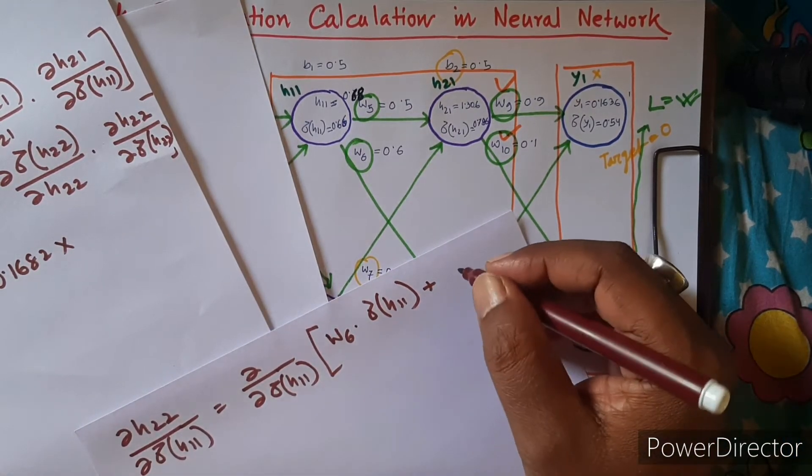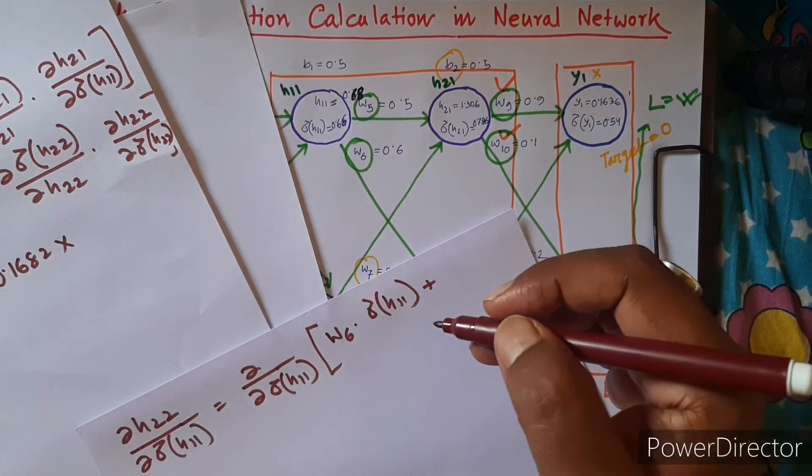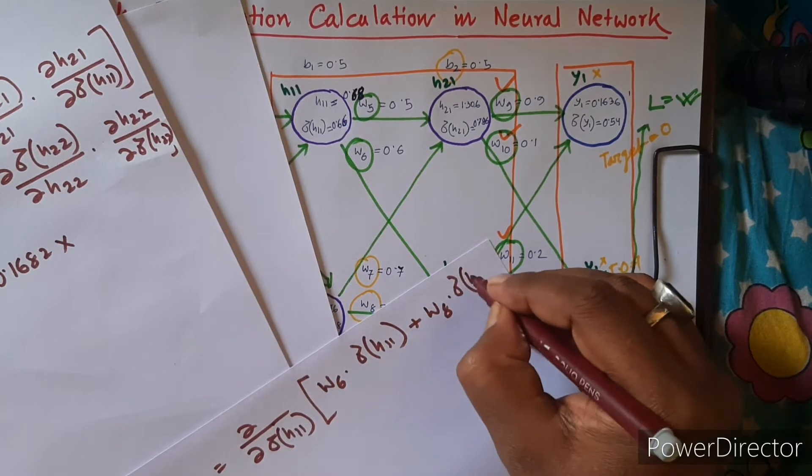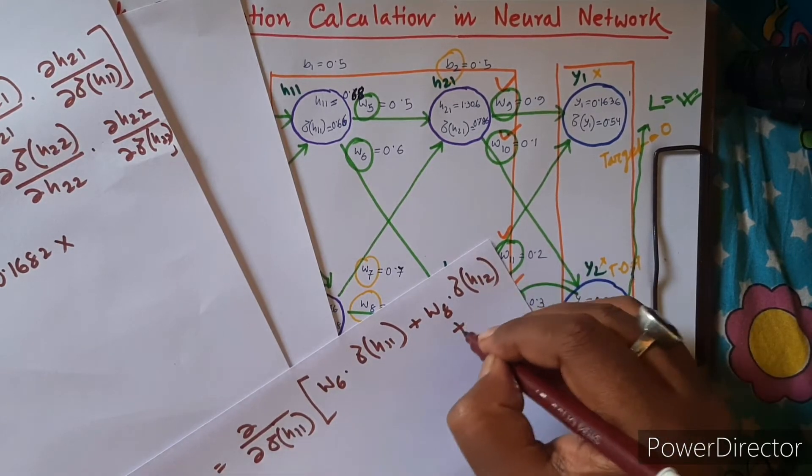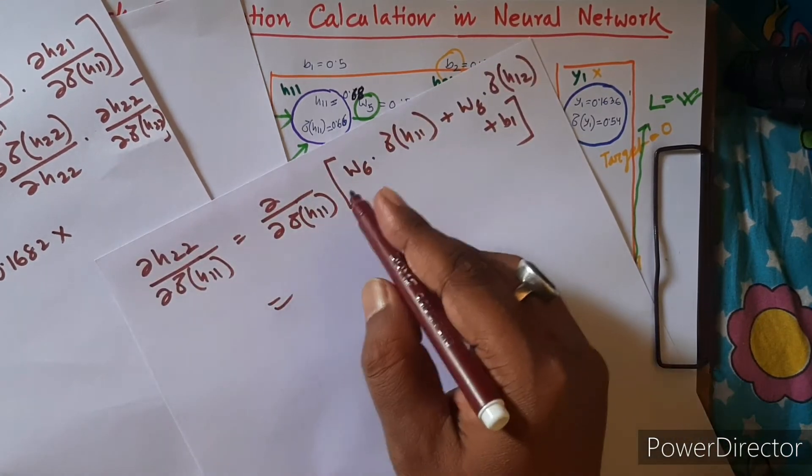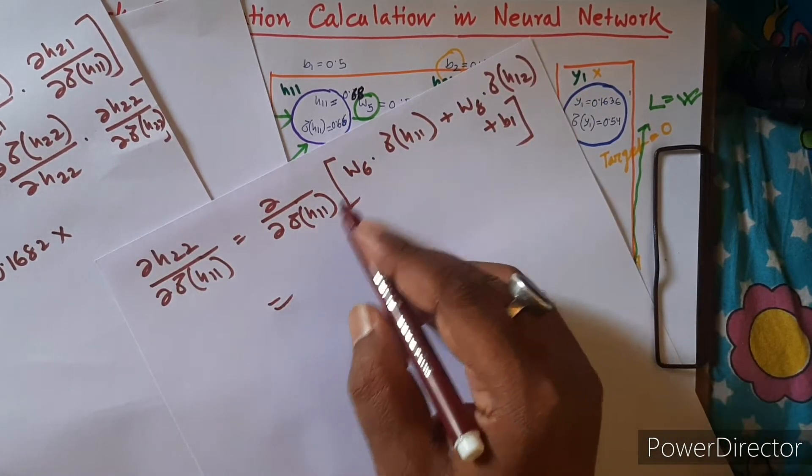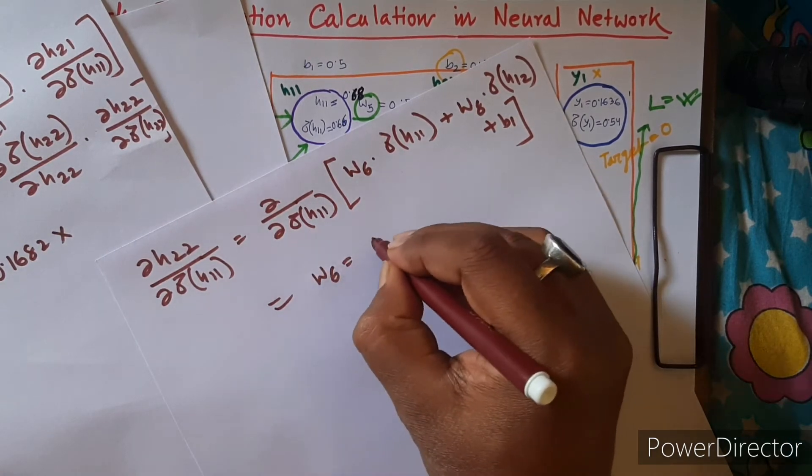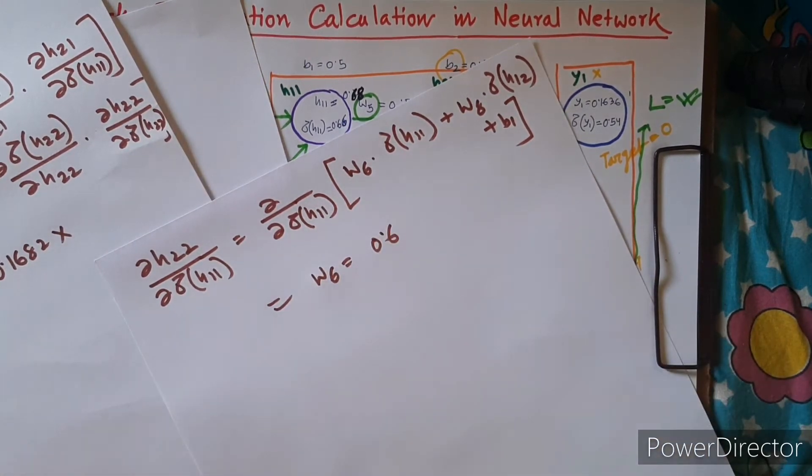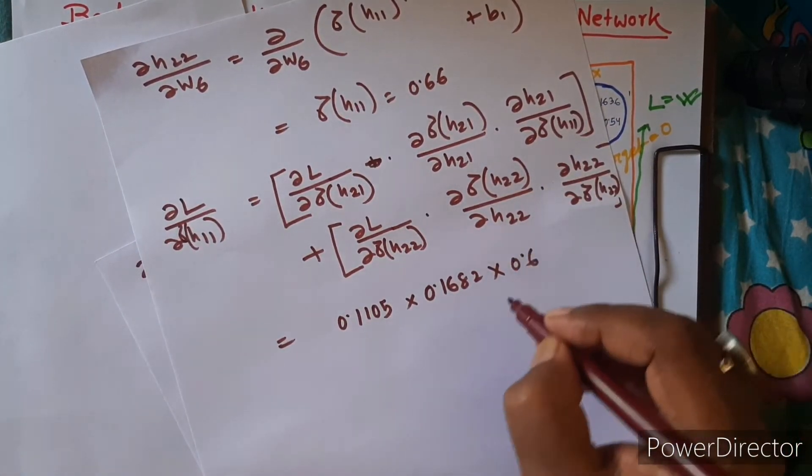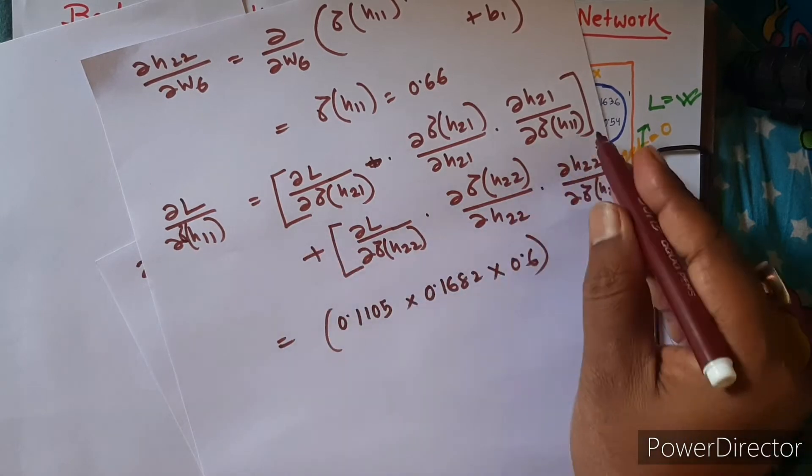Plus B1, right. So it will be taking other things as constant. We are doing partial derivative, so it will be W6 is equal to 0.6. So overall it will be 0.6. This is the first portion.